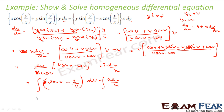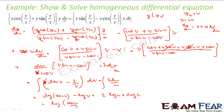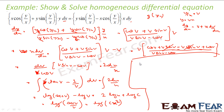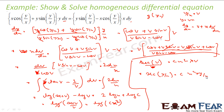Now we can integrate. So this becomes log of sec v minus log of v is equal to 2·log of x, and I will say log of c since everything is log. So what I get here is log(sec v / v) = log(c·x²). You remove log from both sides, so what you get is sec v / v = c·x².